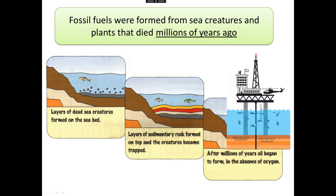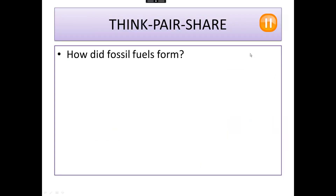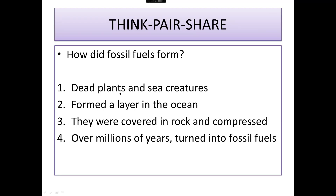So we now dig up the fossil fuels — it is non-renewable. Once we've got it all up, there will be none left because it takes millions of years for fossil fuels to form. So we cannot make more fossil fuels ourselves; we cannot use it as a method of taking carbon dioxide out of the atmosphere. Pause and think of a sentence: how did fossil fuels form? Here's my answer. Dead plants and sea creatures formed a layer in the ocean, were covered in rock and compressed. The weight of the rock pressed down on them, then over millions of years they turned into fossil fuels.